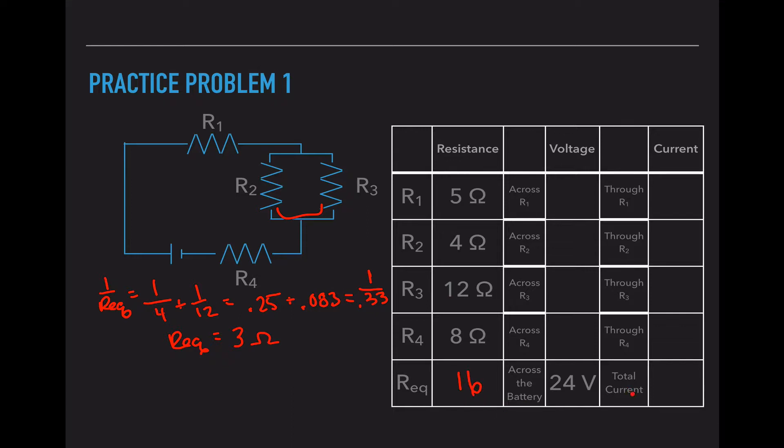Now I can calculate my total current using V equals IR. V from the battery is 24 volts. My resistance is 16. So 24 divided by 16 is 1.5 amps.